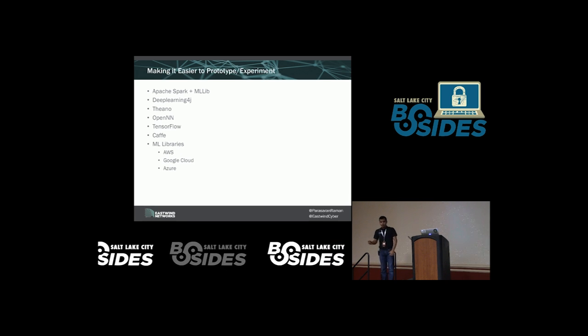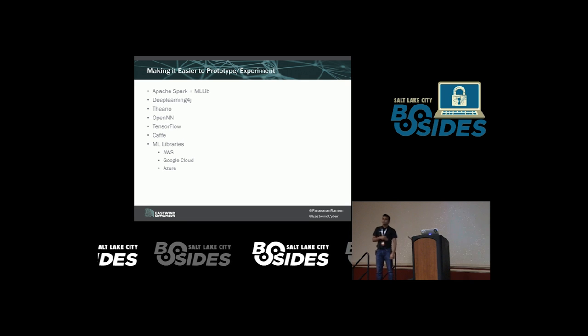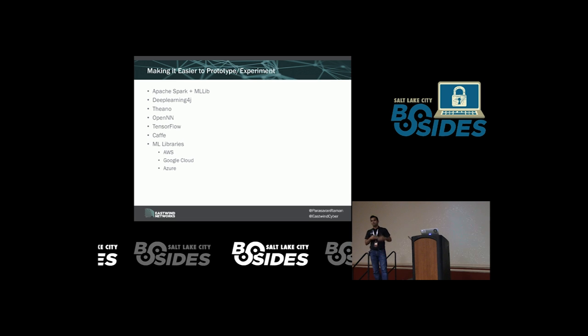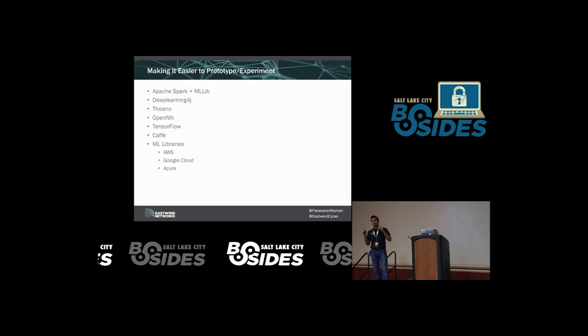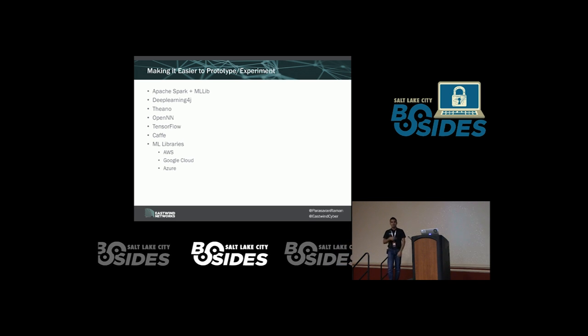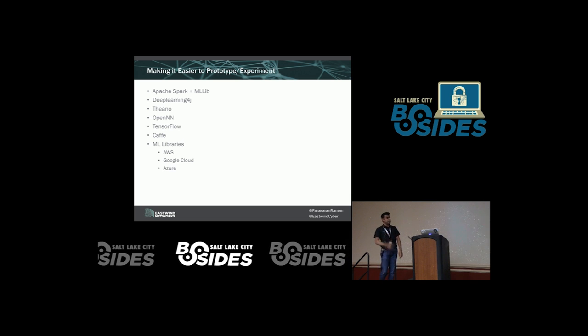A number of open source projects have made it really easy to prototype and implement simple and effective machine learning algorithms. My favorite ones are MLlib, which is part of the Apache Spark project, and Deep Learning 4J.